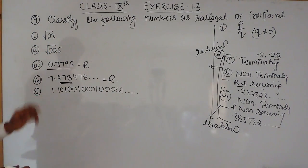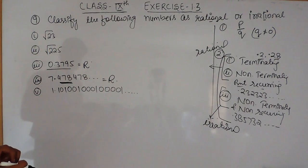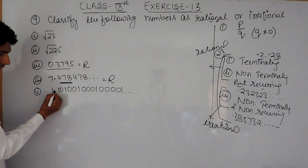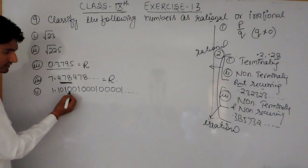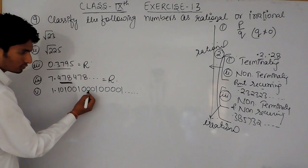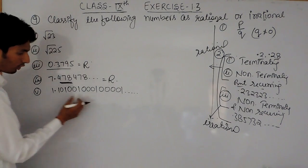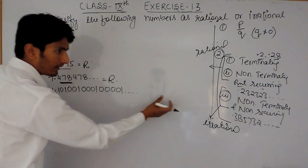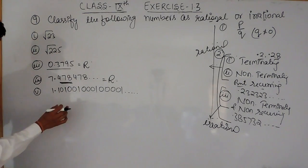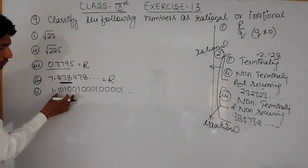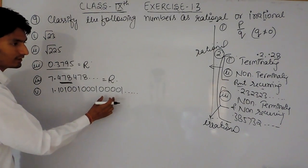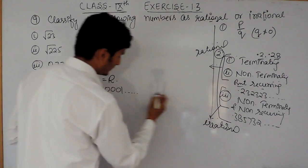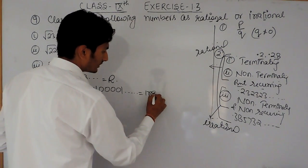Now for the fifth part, the number is 1.101001001... This is non-terminating and non-recurring — no digit pattern is repeating itself. So by this definition, this should be irrational.